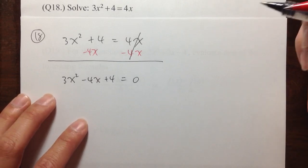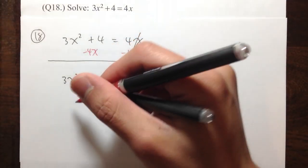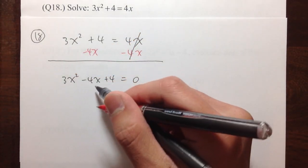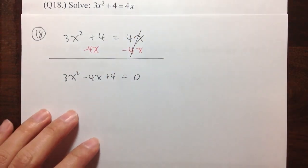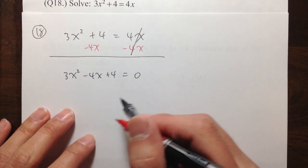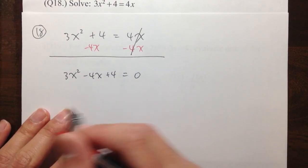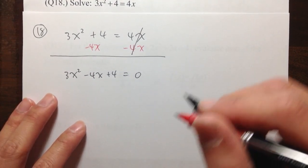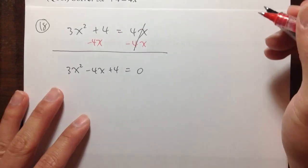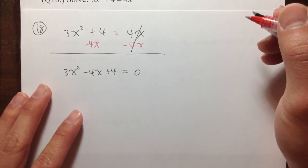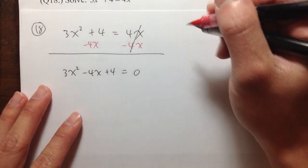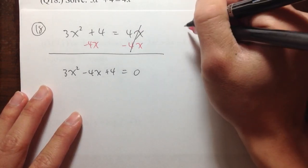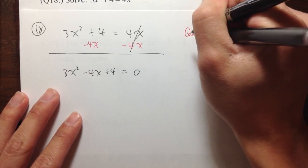However, in this case, no matter how you try it, 3x squared minus 4x plus 4 is actually not factorable. So what we are going to do is use the quadratic formula.